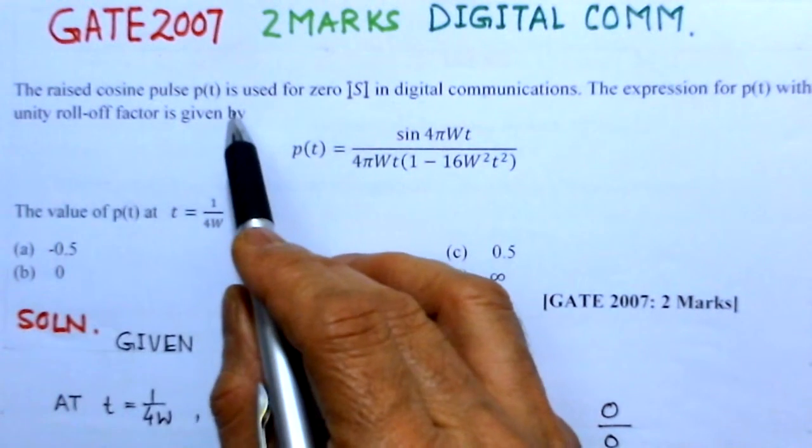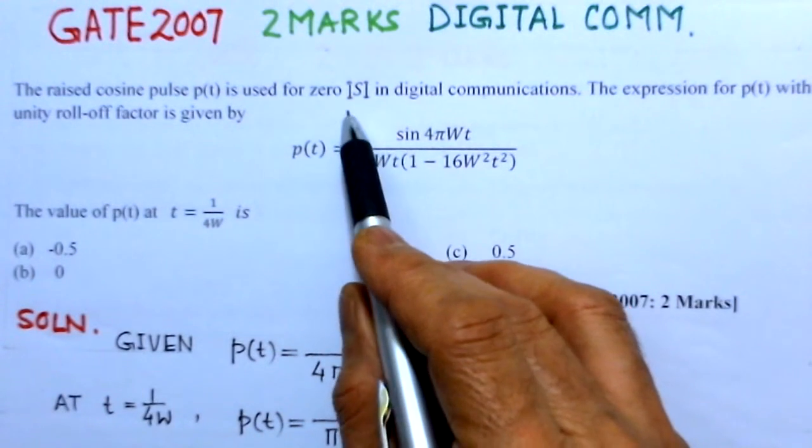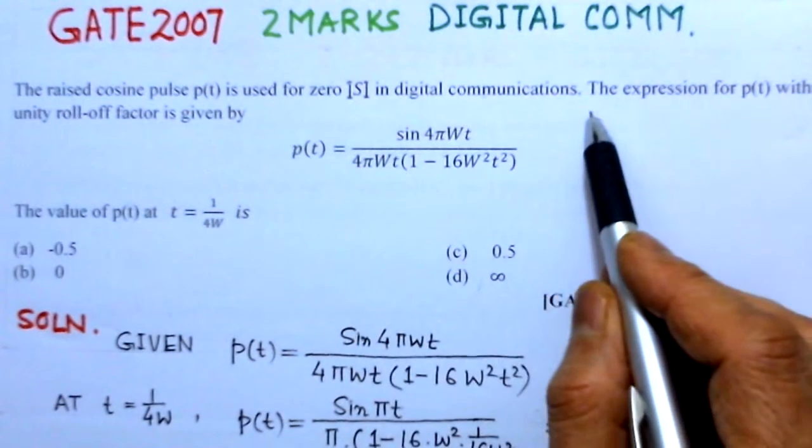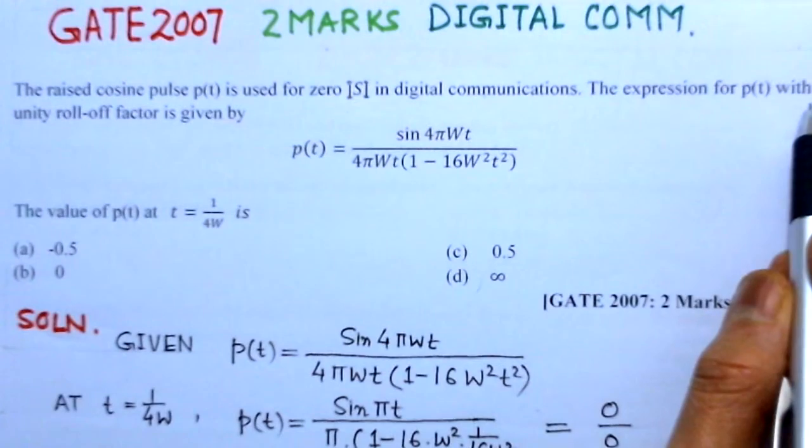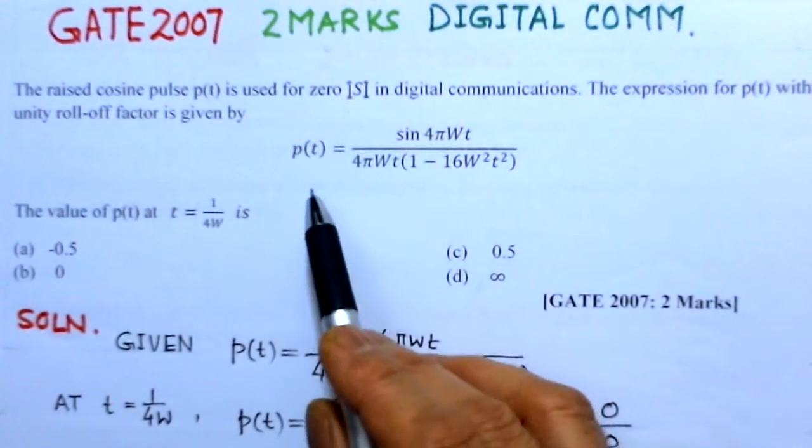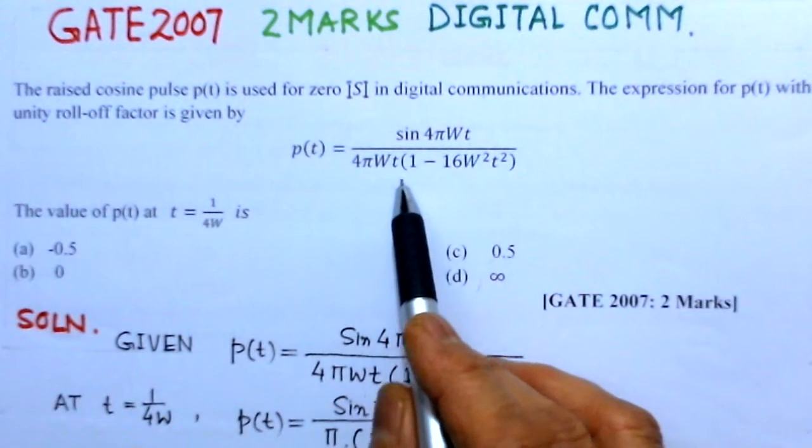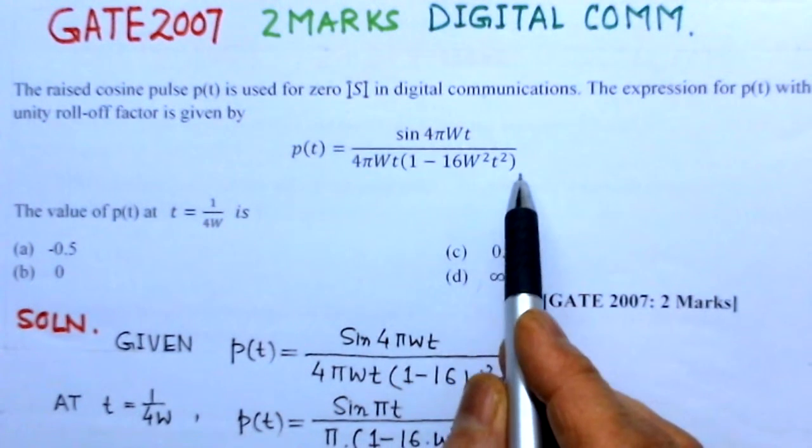It says that the raised cosine pulse P(t) is used for zero inter-symbol interference in digital communications. The expression for P(t) with unity roll-off factor is given by P(t) equals sin 4πWt over 4πWt into 1 minus 16W²t².